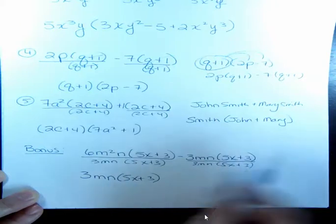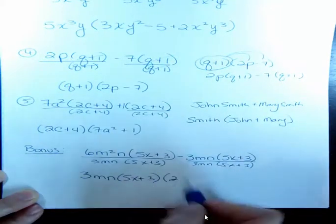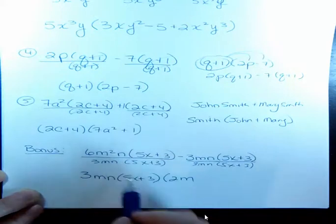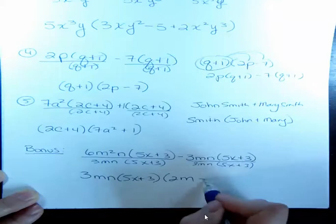What happens here? Well, I have 2m. That's all that's left. The n's go, the 5x plus 3 goes. And over here, I took everything, so I have minus 1.